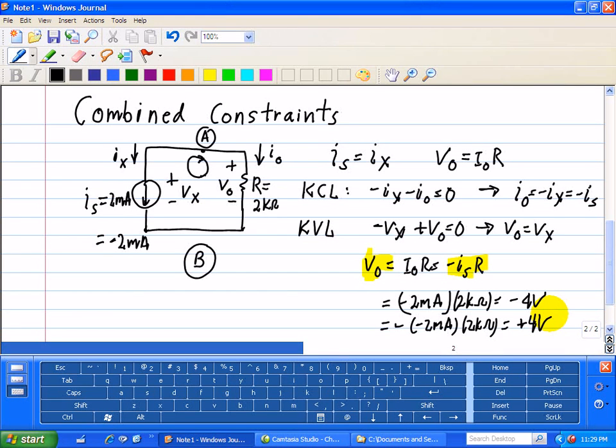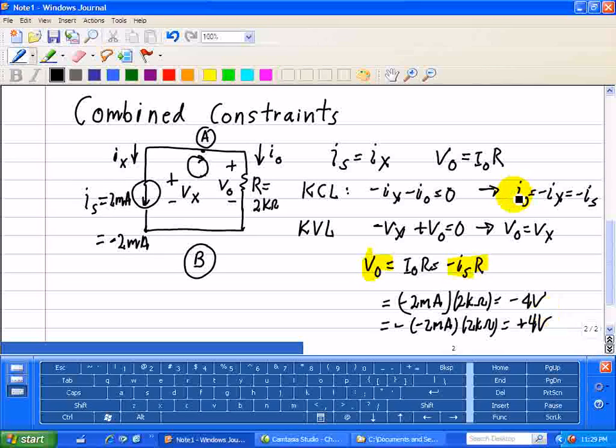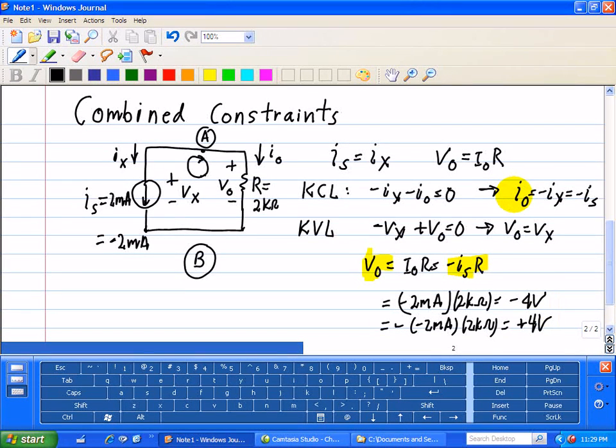This example confirms that algebraic signs of the output VX and VO are always the opposite signs from that of the input driving force IS. We can see that also with the output current IO. If IS is 2 milliamps, then IO is minus 2 milliamps. If IS is negative 2 milliamps, IO is positive 2 milliamps.